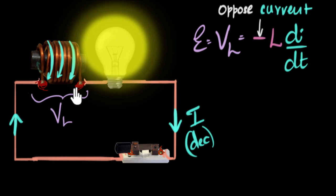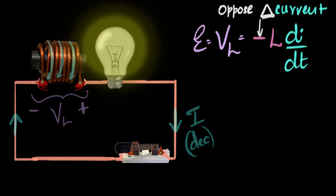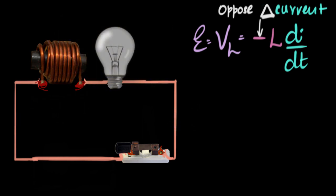Remember, inductors have no problems with the current. They have a problem with changing current. And so they oppose the change. So if the current is increasing, they'll try to decrease it. But in our case, the current is decreasing. So the inductor will try to increase it. So in this case, to increase the current, it will support the current. So it'll act like a battery and support the current. And as a result, the current will flow for some time, but it can't keep maintaining that. Eventually, dI/dt will go to zero. And so with time, the EMF decreases, the current decreases, and eventually the bulb runs out.